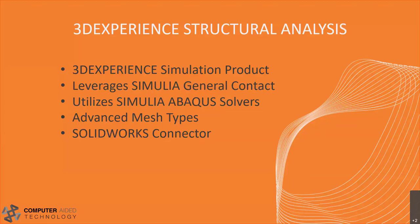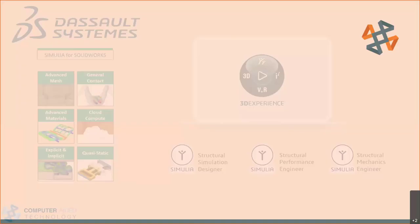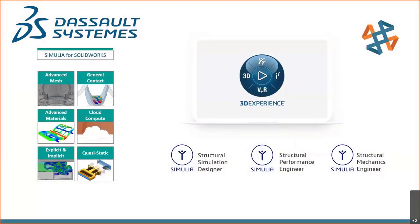There are a few different levels of the Simulia for SolidWorks products. They come in a three-tiered system, very similarly to how SolidWorks Simulation handles theirs, with each tier building on the last. They all leverage the same background technology — the advanced materials and solvers that Abacus offers, as well as the different mesh types and general contact.